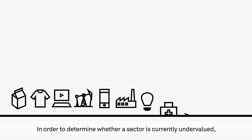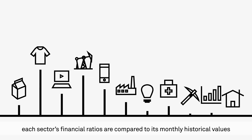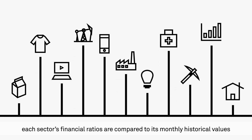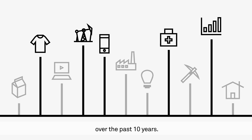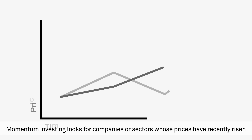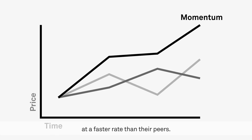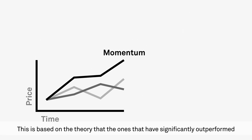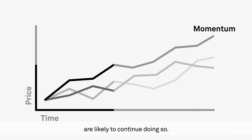In order to determine whether a sector is currently undervalued, each sector's financial ratios are compared to its monthly historical values over the past 10 years. Momentum investing looks for companies or sectors whose prices have recently risen at a faster rate than their peers, based on the theory that those that have significantly outperformed are likely to continue doing so.